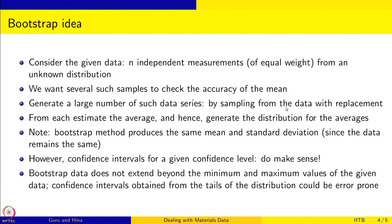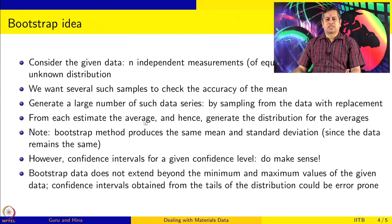It does that by sampling the data with replacement, thousands of times for example, and from that calculates the distribution for the mean. From each of these datasets we are calculating the average and then getting the distribution for the average. Notice that because we are sampling from the same data with replacement, you cannot really get any more information about the mean or standard deviation — it is the same data, so mean and standard deviation do not change at all.